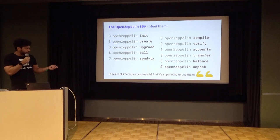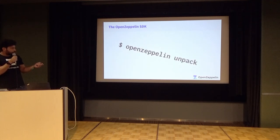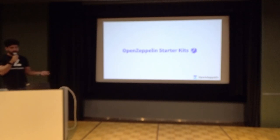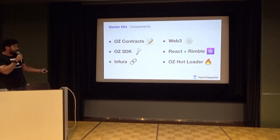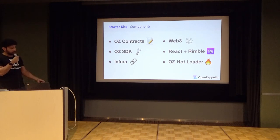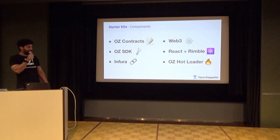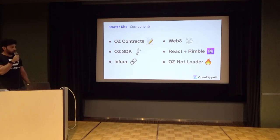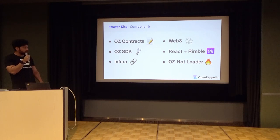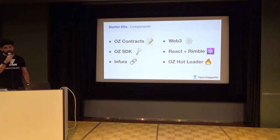I saved the unpack command for last because this is the link we have with OpenZeppelin Starter Kits, which are basically dApp boilerplates for you to start your decentralized applications with just a couple of commands. The components of the starter kits are: OpenZeppelin contracts, OpenZeppelin SDK, Infura for connecting to any network, a killer one-liner Web3 adapter to avoid the cumbersome first-setup process of Web3, React and Redux for managing your front-end components, and the OpenZeppelin hot loader — a tool that lets you modify your contracts on the go, and after saving them, see those changes reflected live in your website.